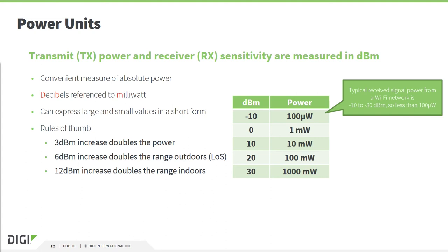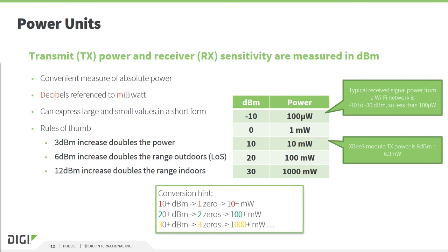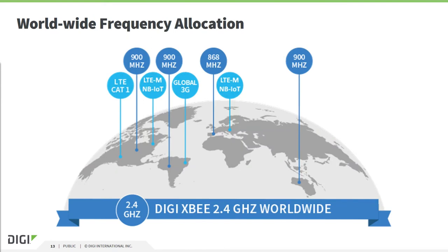Some examples of parameters: minus 10 dBm is the typical power used in your Wi-Fi network, and the XBee3 modules working in 2.4 GHz are normally below 10 dBm or below 10 milliwatts. To convert dBm to milliwatts, a hint: the tens digit in the dBm value shows you how many zeros you need to add in the milliwatt value. 2.4 GHz is available worldwide; for longer range, Digi supports 868 MHz in Europe and 900 MHz in the Americas, Australia, and some parts of Asia. Digi also supports cellular technologies like 3G, CAT1, LTE-M, and Narrowband IoT.